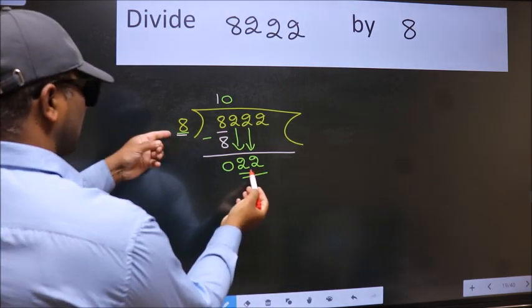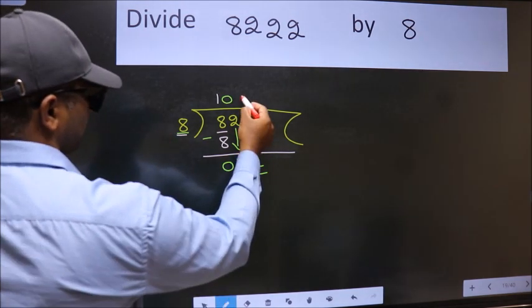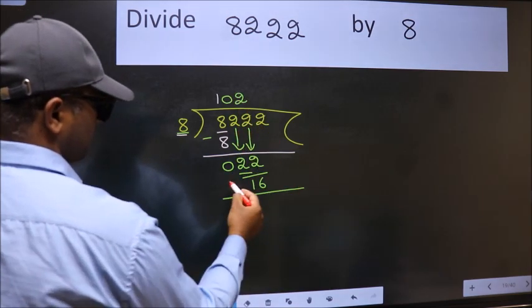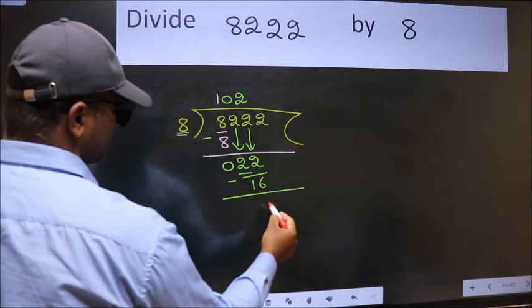The number closest to 22 in the 8 table is 8 times 2, which is 16. Now we subtract and get 6.